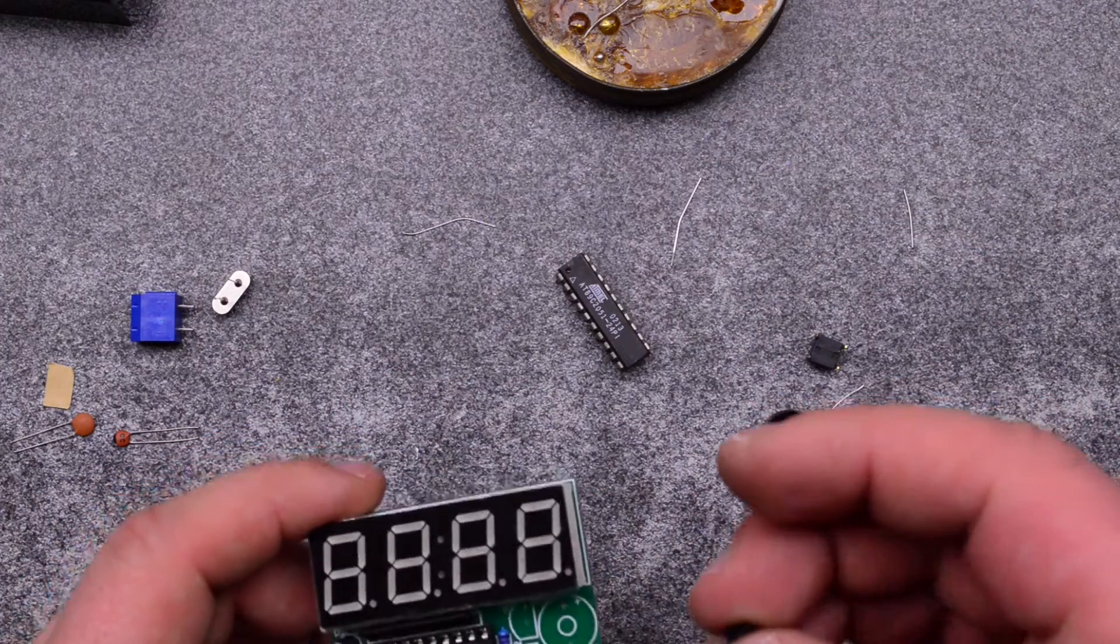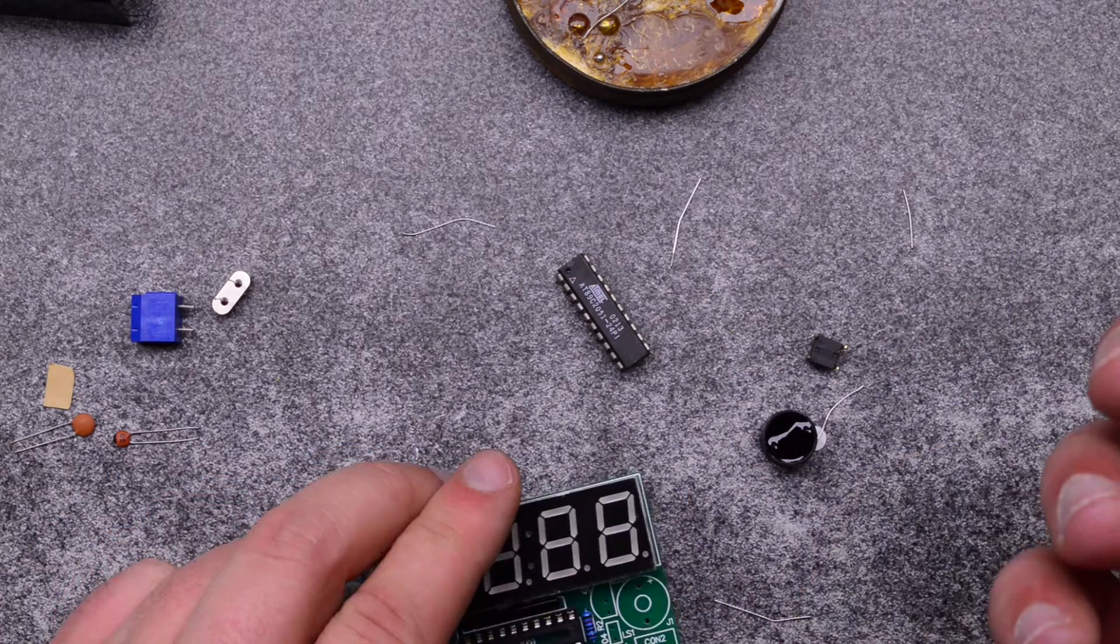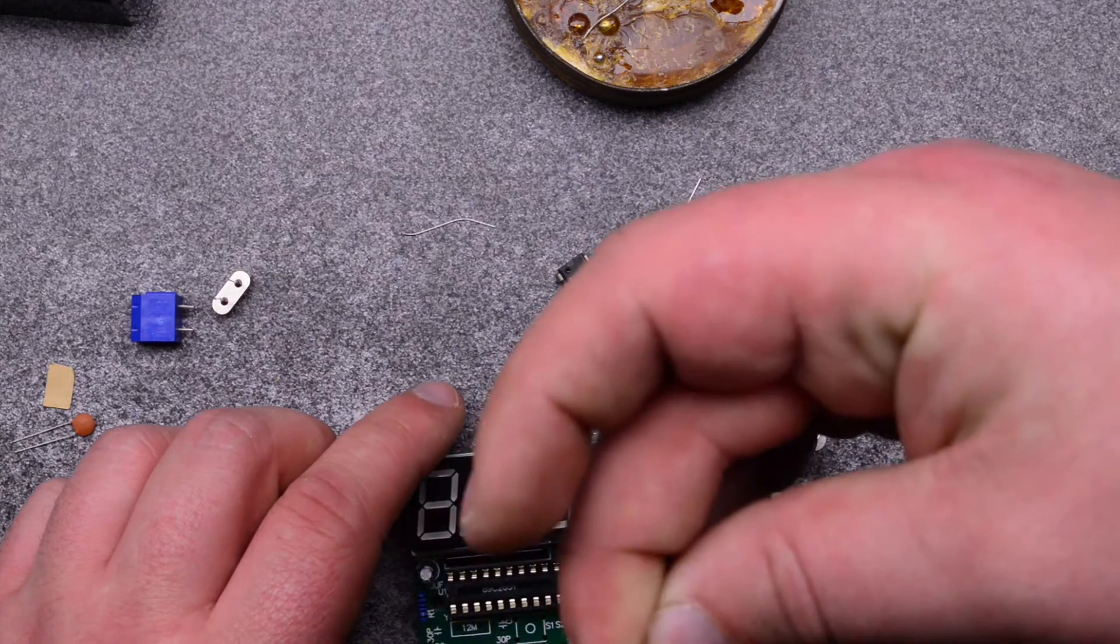Next we can go with our transistor. You don't really need to know where is the base, emitter, and the collector. Just by looking at the PCB and curved side, just need to match the view.